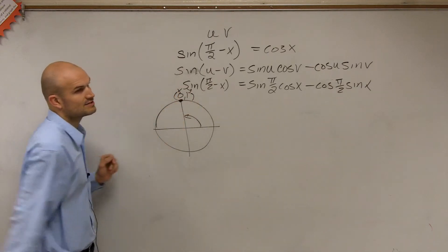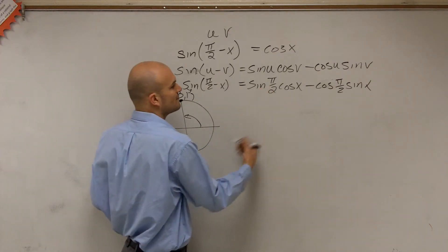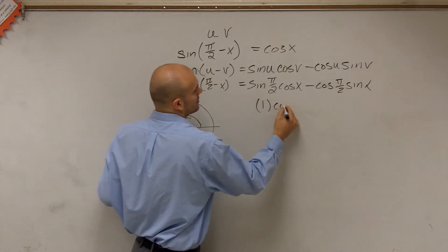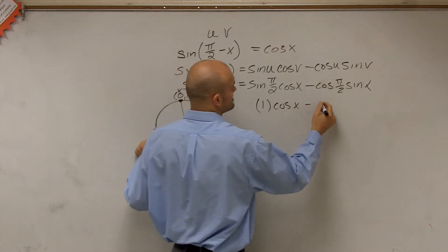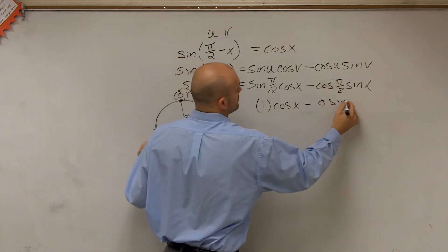Therefore, the sine of π/2 is going to be 1 times cosine of x minus cosine of π/2, which is going to be 0 times sine of x.